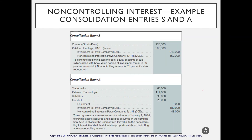We begin our consolidation entries, which are pretty much the same as in Chapter 3 except that here we account for the non-controlling interest. Entry S eliminates Pond's subsidiary equity: we debit common stock, debit beginning retained earnings, and credit the investment in Pond Company — but only 80%. The other 20% goes to the non-controlling interest.